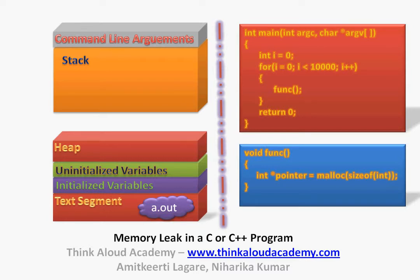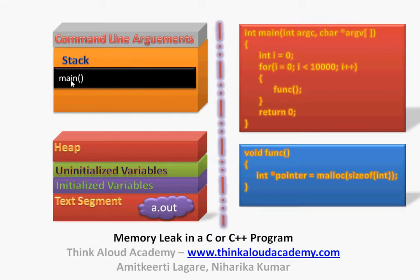Let us see how memory leak occurs. I have a main function in which I run a for loop for about 10,000 times, and every time I call the function FUNC. In this function, I create a pointer and allocate memory. Let us walk through this code and see how it behaves on the stack and heap. Once main is called — main is the first function that gets called — when main starts executing, the variables of main are allocated memory on the stack. Since we just have the variable i, there would be memory for i allocated there.